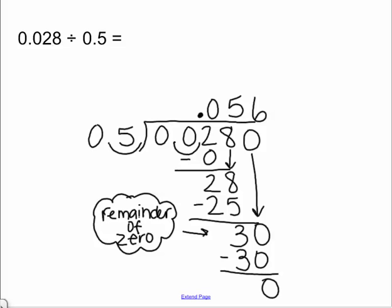So the quotient for this division problem is 0.056.